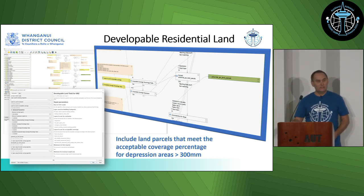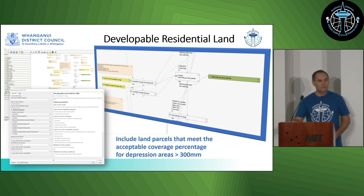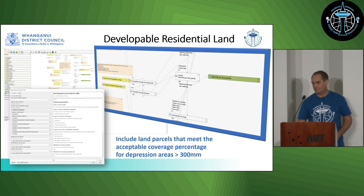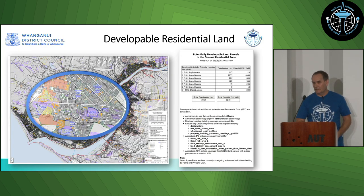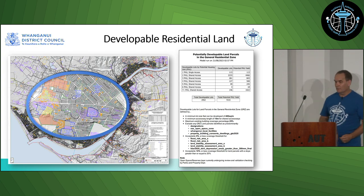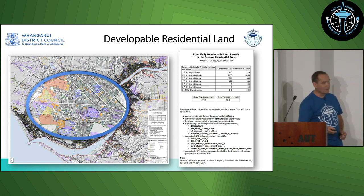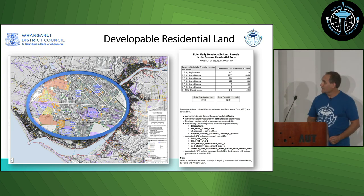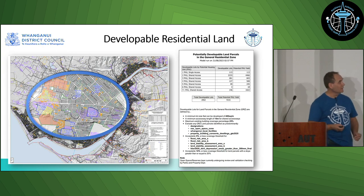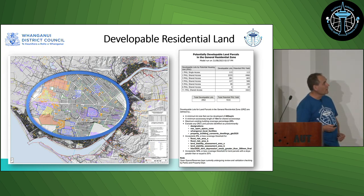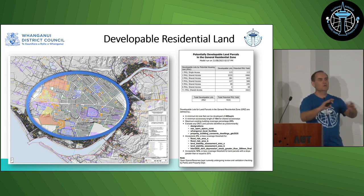We had a large QGIS model that basically produces a dataset about which land is really developable in Whanganui City — something we didn't really ever have before. Depression areas was one of the major components. The data shown on the left-hand side is all being produced out of a QGIS model, which is pretty cool.